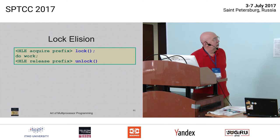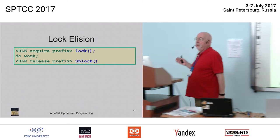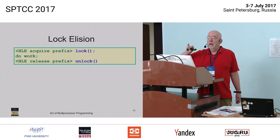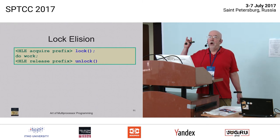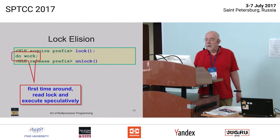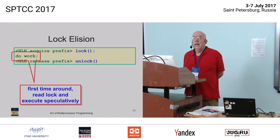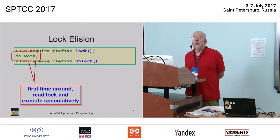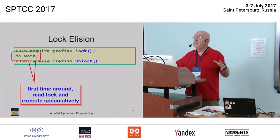Intel has built-in support for this called lock elision. Intel knows which instructions are used to acquire locks. You can put a prefix operation in front of that, which in older Intel architectures is a no-op but says: if you have hardware support for transactions, execute this as a transaction. You don't need to change your code — you can take old code that uses locks, use a binary editor to add this prefix in front of each lock and unlock instruction, and this is a way of retrofitting transactions to old code.